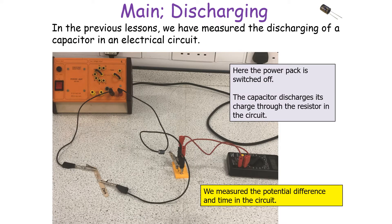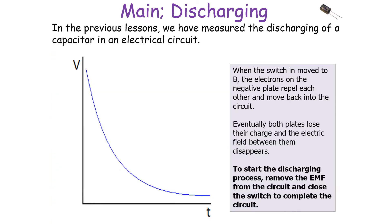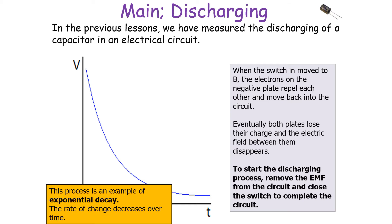In previous lessons we also looked at how to measure the discharge of a capacitor in an electrical circuit. A capacitor can discharge when the power pack is switched off, and you can measure this with potential difference against time. When the switch is moved to an open position, the electrons on the negative plate repel each other and move back into the circuit. Eventually both plates lose their charge and the electrical field between them disappears. To start the discharging process, you remove the EMF from the circuit and close the switch to complete the circuit.